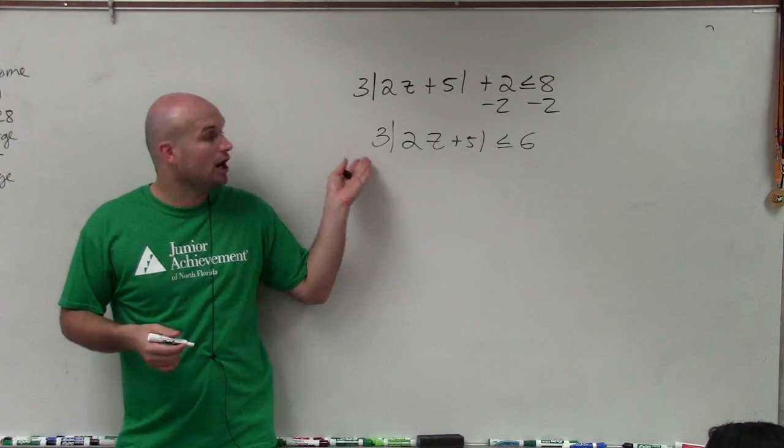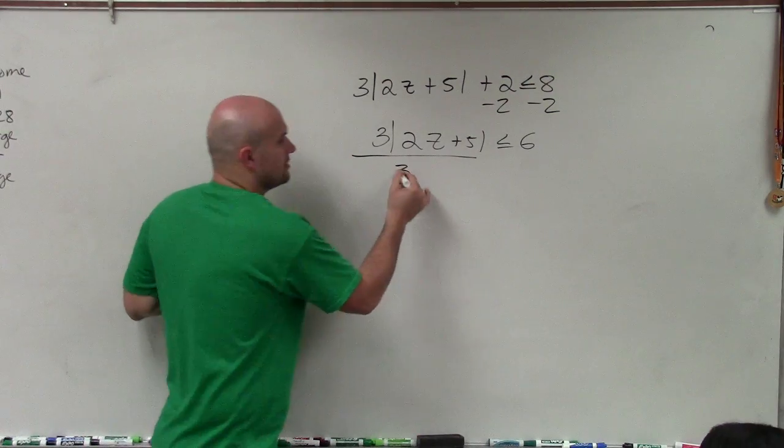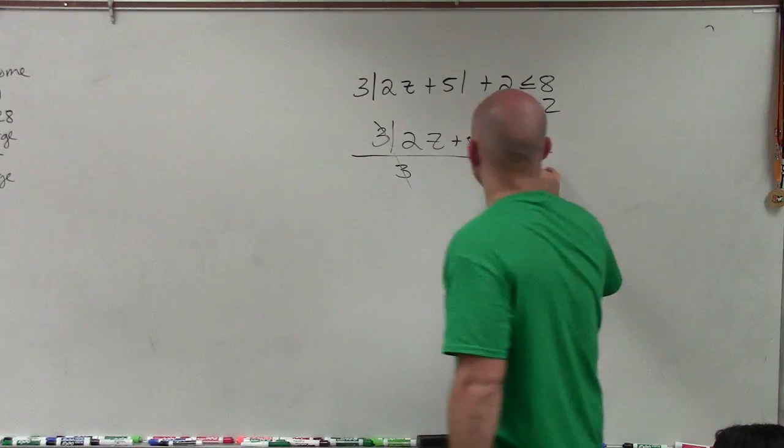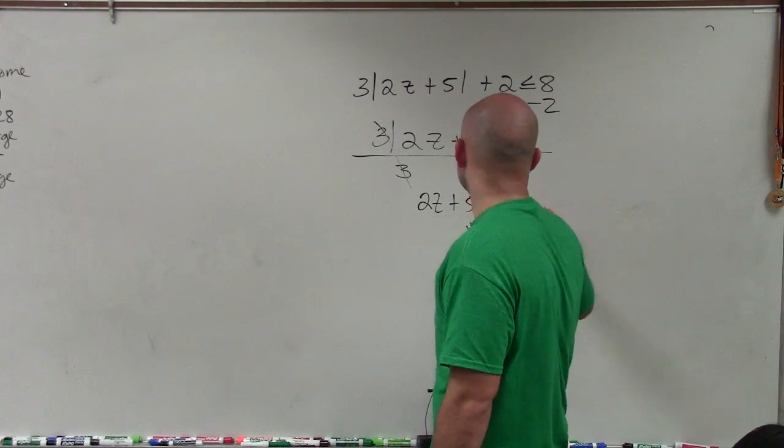Now to undo multiplying by 3, I'm going to divide by 3. So I divide 3 on both sides and therefore I'm left with |2z + 5| is less than or equal to 2.